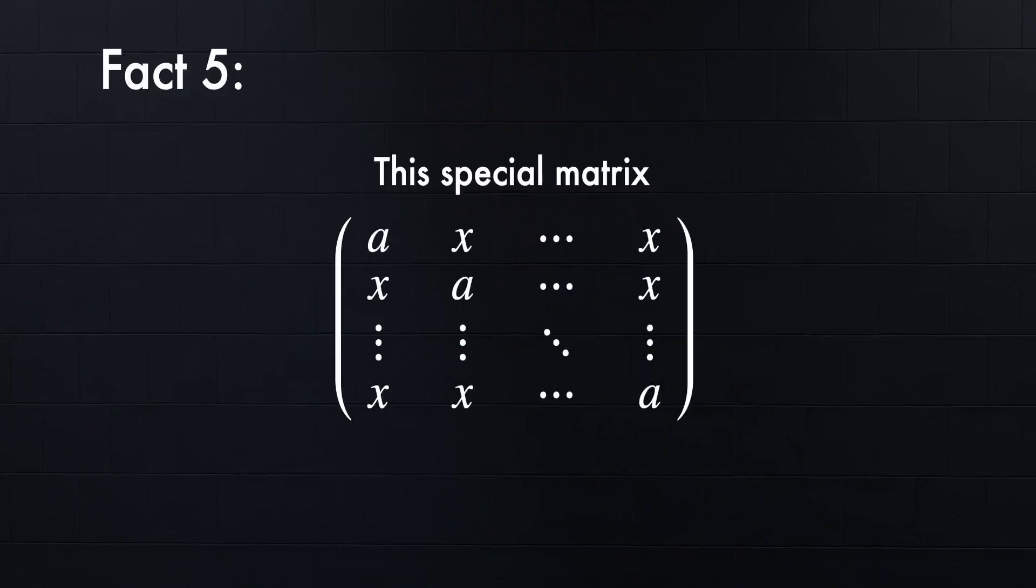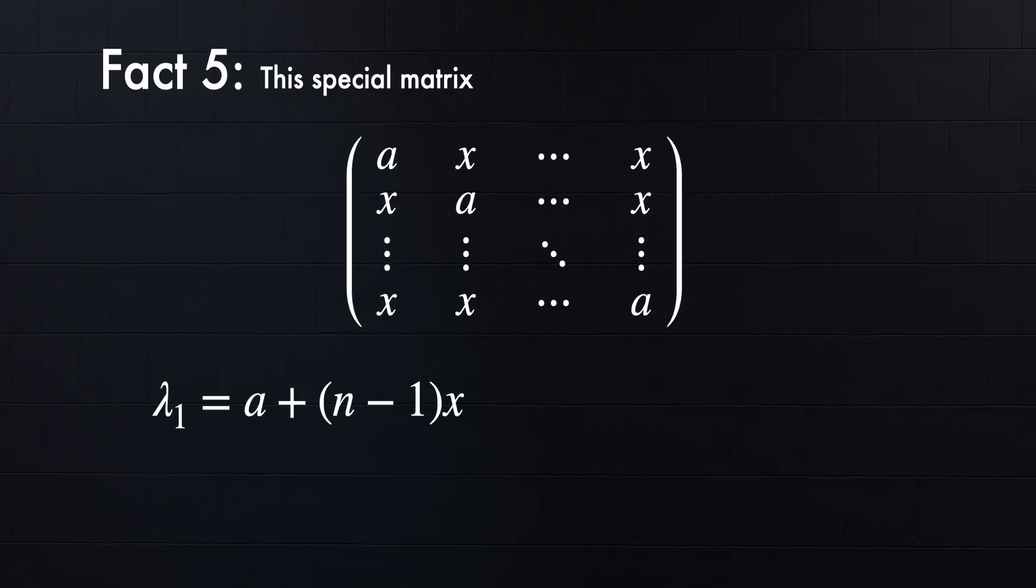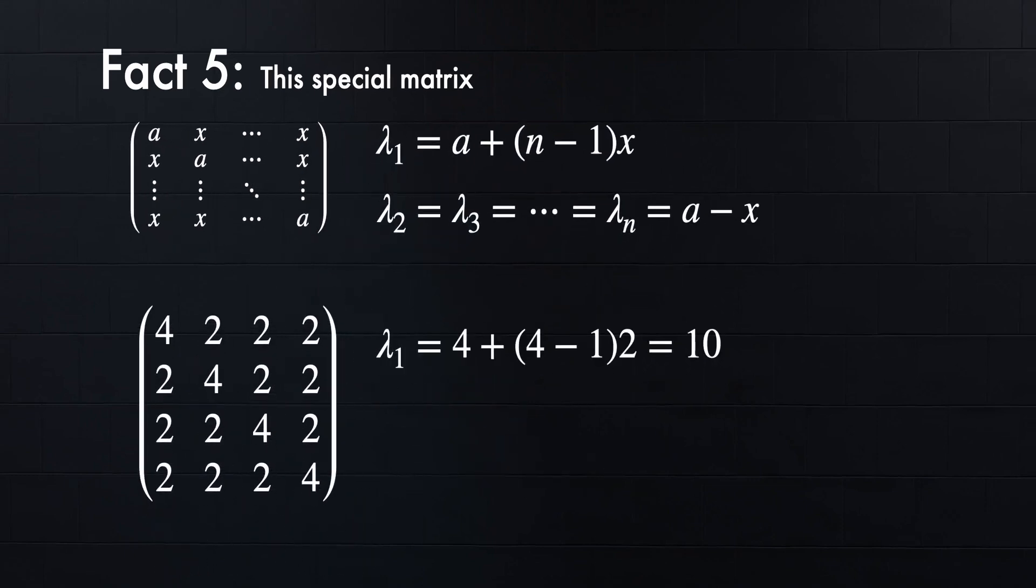Here is Fact 5. It's more of a special case when you have a matrix of this form as shown here. Here, your first eigenvalue is the sum of the rows, which is a plus (n - 1) times x, and all the rest of the eigenvalues are a minus x. For example, if you look at this matrix, our first eigenvalue is 4 plus (4 - 1) times 2, which is 10, and all the others are 4 minus 2, which is 2.